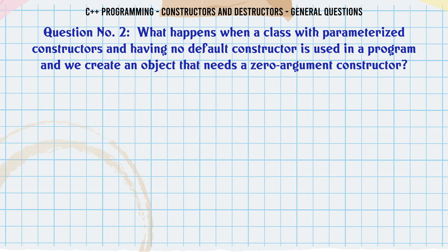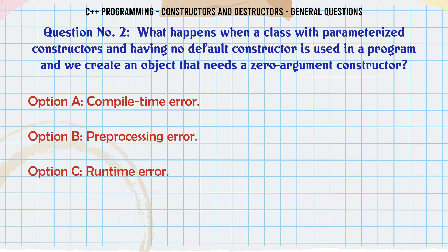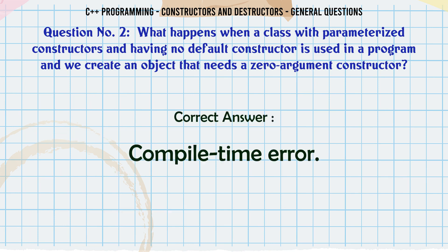What happens when a class with parameterized constructors and having no default constructor is used in a program and we create an object that needs a zero argument constructor? A. Compile time error. B. Pre-processing error. C. Runtime error. D. Runtime exception. The correct answer is Compile time error.